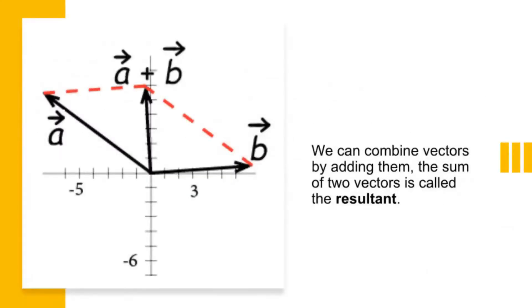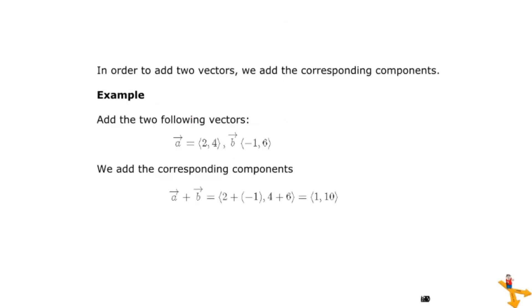We can combine vectors by adding them. The sum of two vectors is called the resultant. In this picture, the resultant is the arrow between the vectors A and B. In order to add two vectors, we add the corresponding components. Example, add the two following vectors: Vector A with ordered pair (2, 4), and vector B with ordered pair (-1, 6). We add the corresponding components as shown. Vector A plus vector B equals (2 + (-1), 4 + 6). The answer is (1, 10).